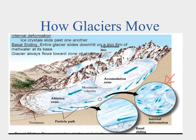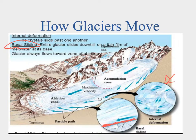We also have what we call basal sliding. Basal sliding is where you have all of this weight pushing down, and you get this thin small layer of water at the bottom, and it's on this water that the glacier can kind of slide over. So you can either cause the ice to break and move through internal deformation, or melt it down and have it flow over this little layer of water — that's what basal sliding is.